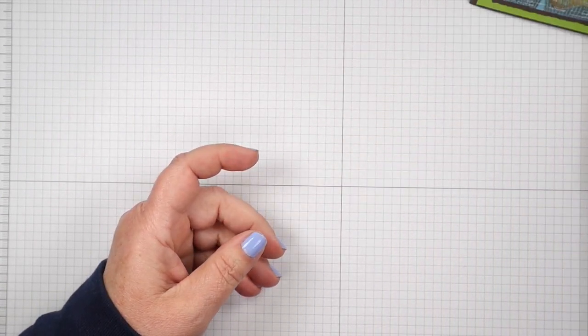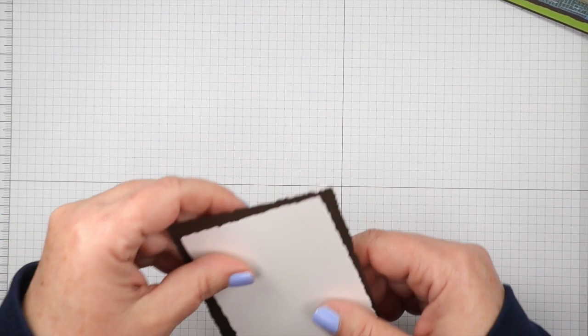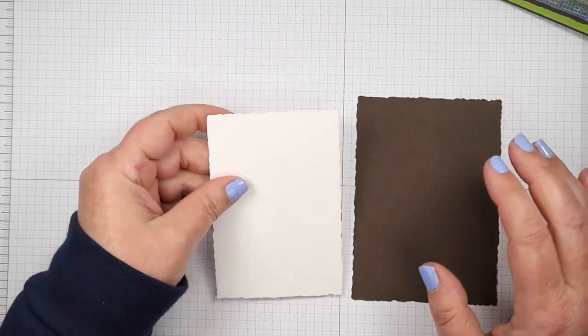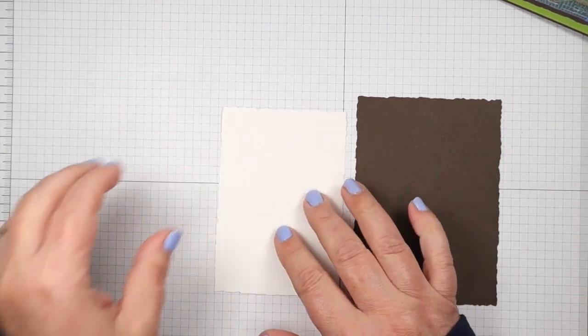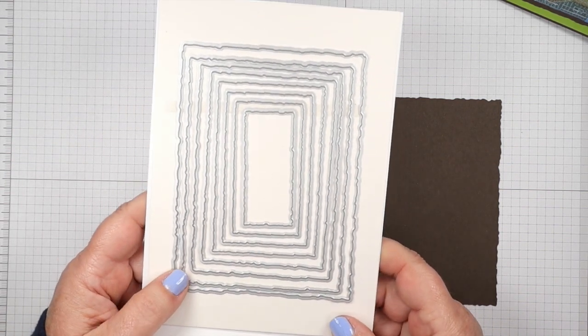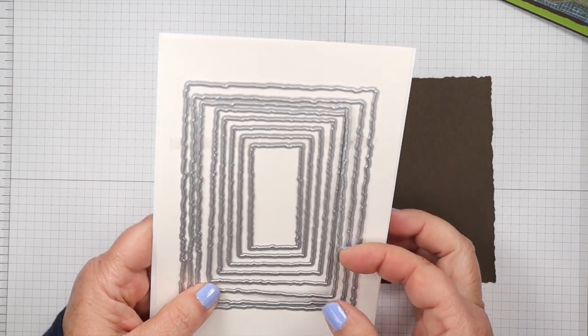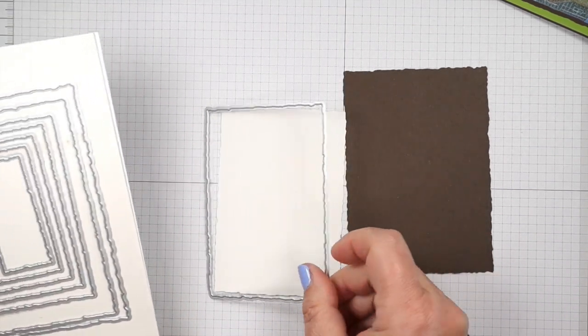We're going to get started with this project with our main panel. I have two of these panels that were cut with the deckled rectangle dies. Here are the dies. There's quite a few layers here. I use the third to the largest, this one here for the white.